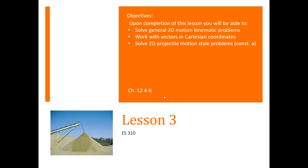We're going to follow the same path through the equations today, except today we're looking at 2D motion. So we're going to start with general 2D motion kinematic equations, and because we're working in 2D, we're working with vectors, so we'll do a quick review of vectors in Cartesian coordinates, and then we will look at the simplifications that occur with constant acceleration.